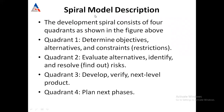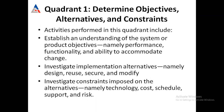In the spiral model there are four quadrants. The first quadrant is to determine objectives. The second is to identify and resolve risk by highlighting prototypes. The third quadrant is to develop and verify the software, checking if there is a need to proceed to the next level. The fourth quadrant is to plan whether we should go for the next phase or not.